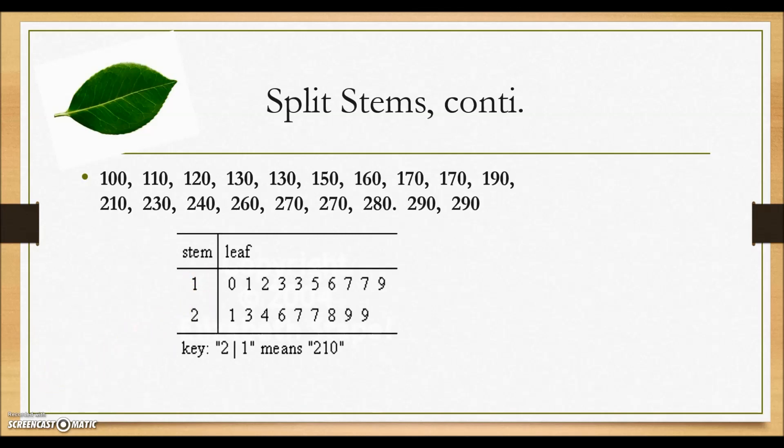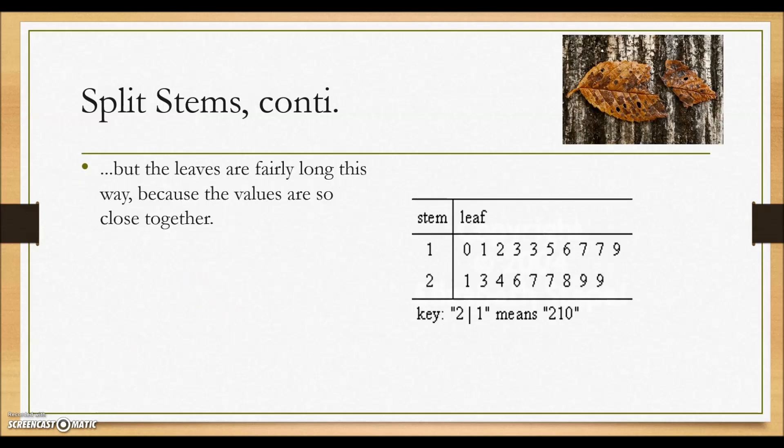With only having two stems, our data is rather bunched together and it's a little harder to pick out detail or trends that the data reveals to us if we could spread it out a bit. We know that most of the values are in the 100s, we still can determine the smallest and the largest values. The leaves are fairly long because the values are so close together.